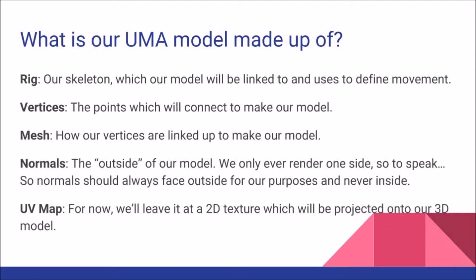First we need to understand what our UMA model is made up of in Blender. There are various things called rigs. These rigs are the skeleton which models are linked to, and they're used to define movement, size, shaping, and everything else. If a rig or skeleton is distorted, the model attached to it is distorted as well.